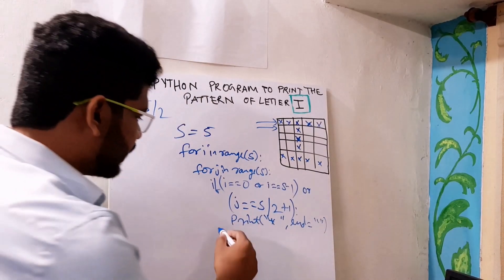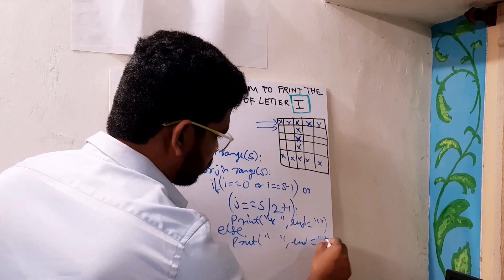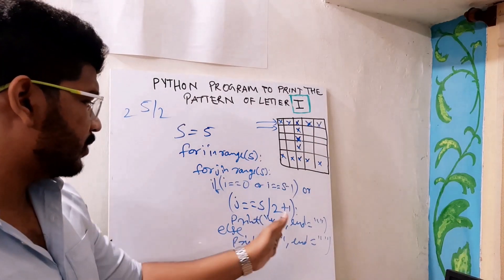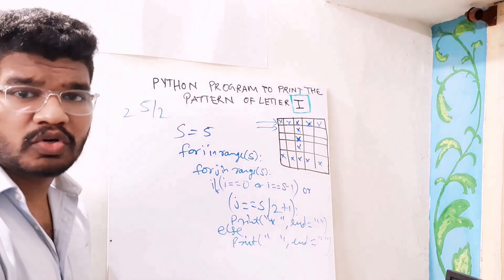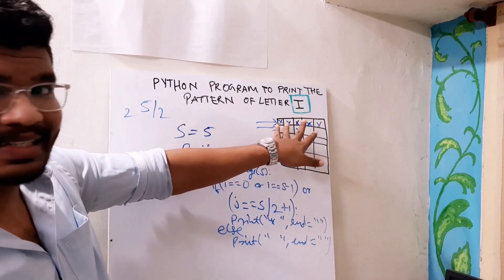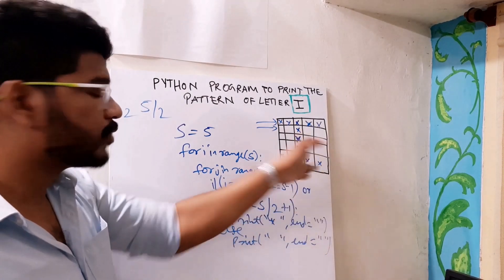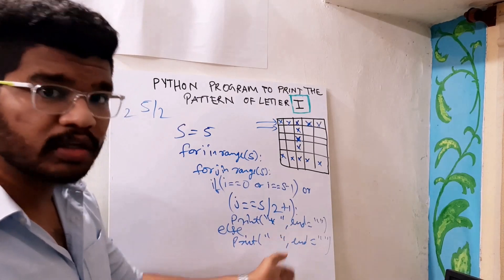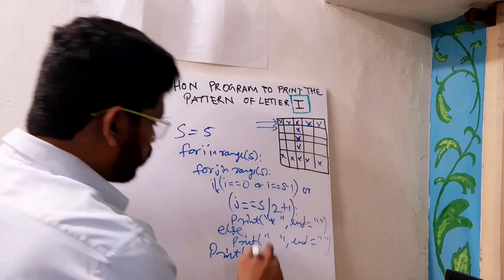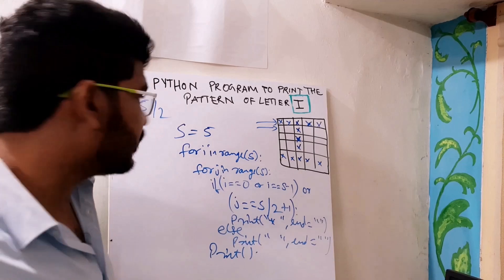I will print a star, and in the else condition I will print a space. If you are following all the previous videos, you might understand these conditions. By default, the print statement goes to the next line, but here after printing a star it should not go to the next line — it should print something beside that. So I use end as a space in both conditions. And finally, outside the inner loop, I need to print an empty print to go to the next line after printing all the stars in a row.